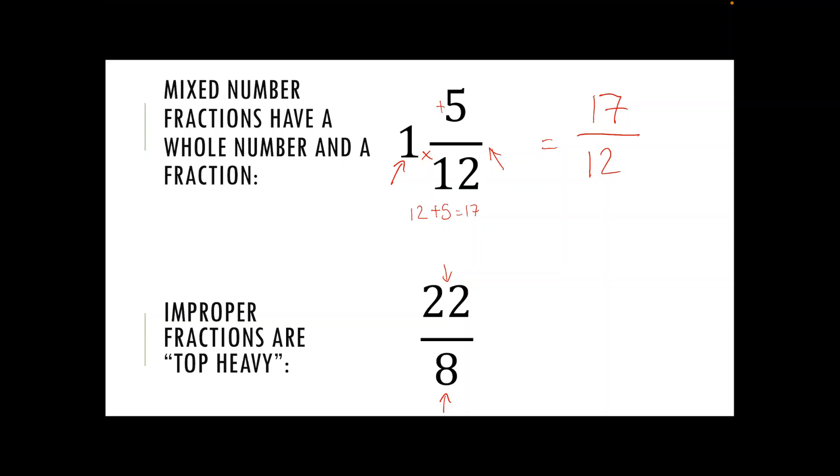On the flip side to that, our top heavy fraction becomes a mixed number fraction. Well we need to start by doing our top number divided by the bottom number. So eight goes into 22 two whole times and it leaves us with a remainder of six.